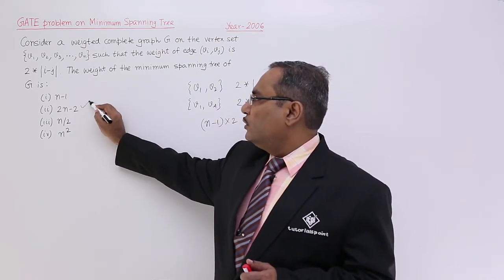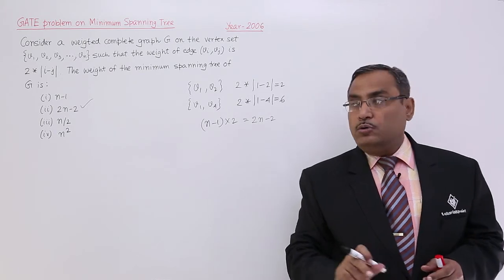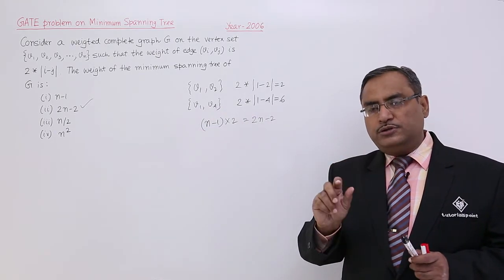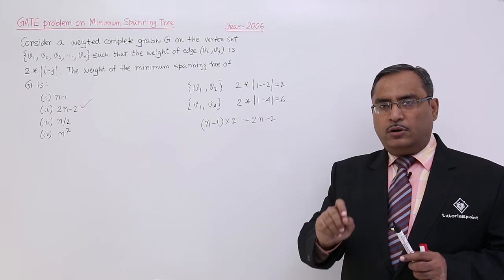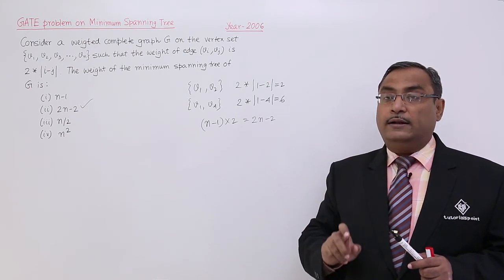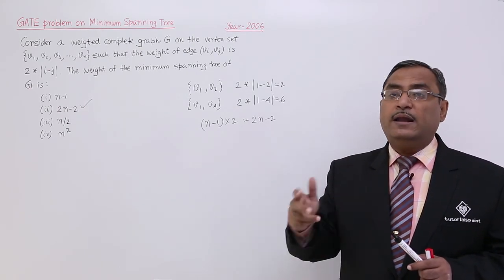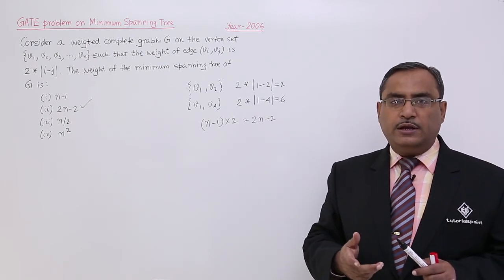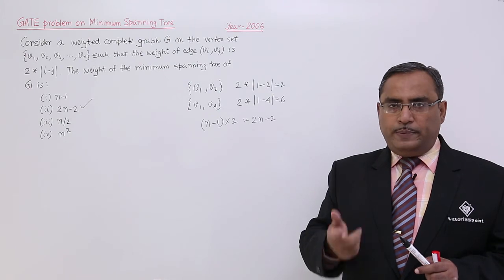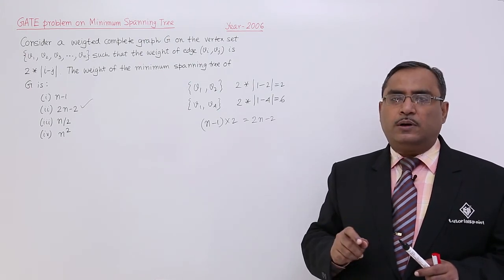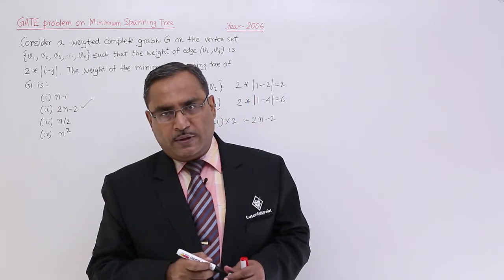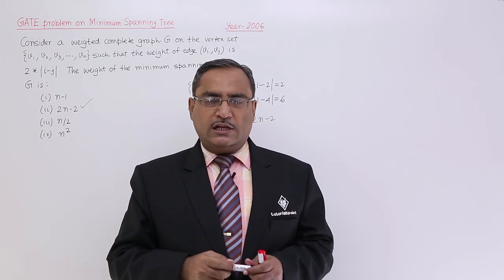My total weight of the minimum spanning tree will be 2 into this, that is 2n-2. I should go for this particular answer, not the other options. That means I am going to select those edges having weight equal to 2, and how many such edges? n-1 number of edges. So the total weight for the minimum spanning tree constructed will be 2 into (n-1), that is 2n-2. In this way the problem has been answered. I think you are getting this logic. Thanks for watching this video.